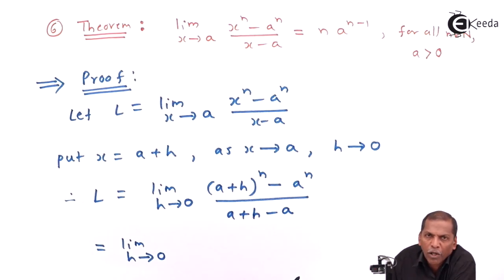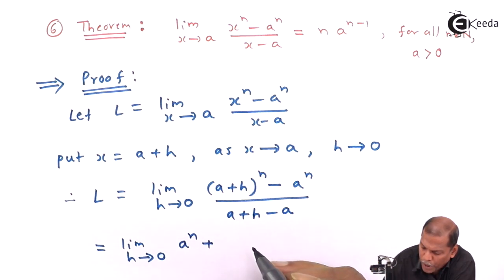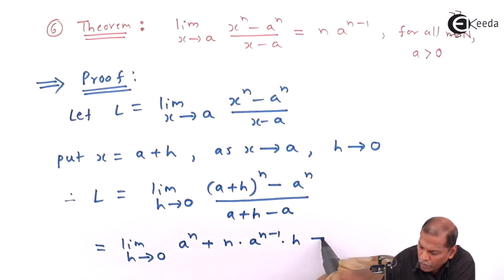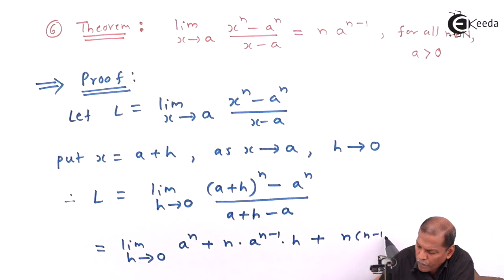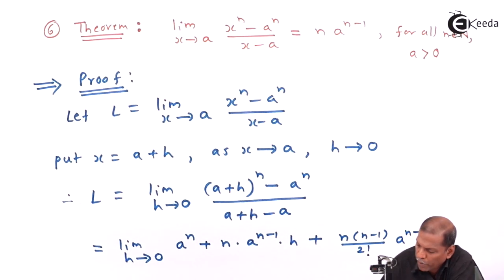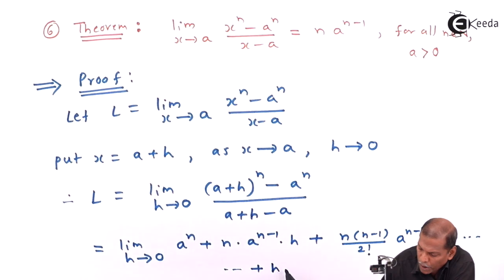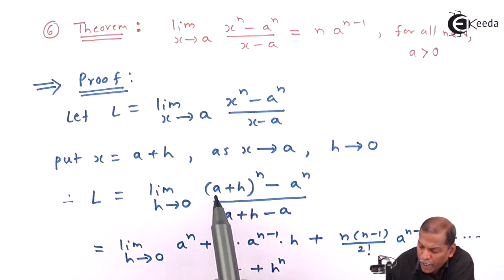That equals limit h tends to 0. Now a plus h whole bracket raised to n can be simplified using the binomial theorem, giving: a raised to n plus n into a raised to n minus 1 into h, plus n(n minus 1) upon 2 factorial into a raised to n minus 2 into h squared, plus going on, up to the last term h raised to n.